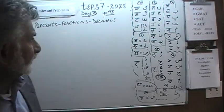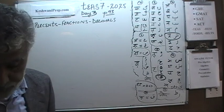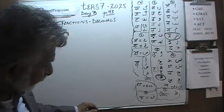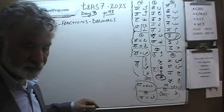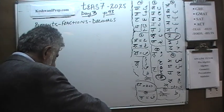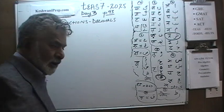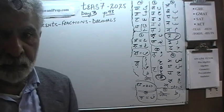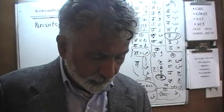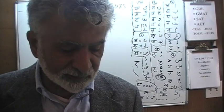Today is our day number 3. We are on page number 93 and we are going to pick up from where we left off yesterday. There are 5 problems at the bottom of the page. We are working on problem number 5, which I thought had 6 parts to it.